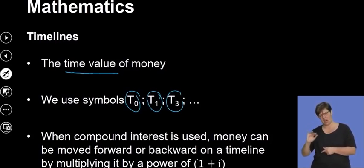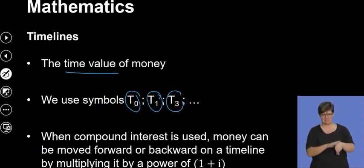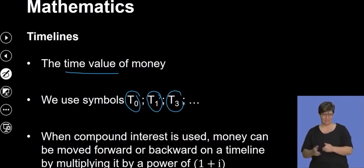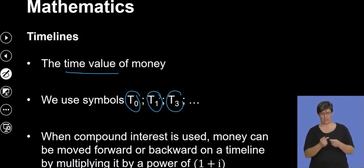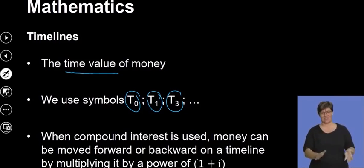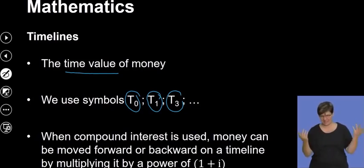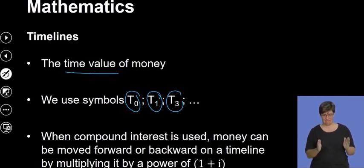We normally use the symbols t0, t1, t2, and so on, to represent the point at which we are on the timeline. So t0 is when the investment is starting, t1 is after one year, t3 is after three years, t4, t10, and so on. Those are the terms and symbols we use.